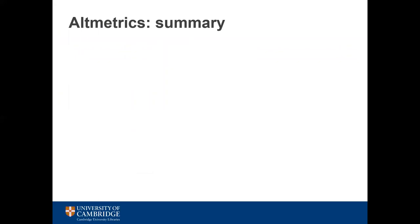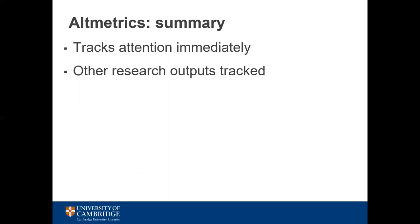To summarize altmetrics: one good thing is that attention to your research is tracked immediately, though older papers may not have any altmetrics as social media didn't exist until relatively recently. Research outputs such as clinical trials, patents, policy documents and books are also tracked — these aren't always picked up by traditional metrics and can be an important indicator of the impact of a paper.